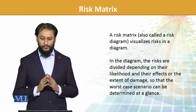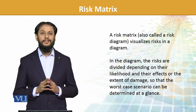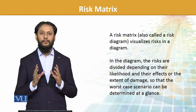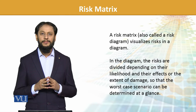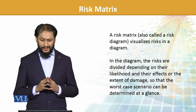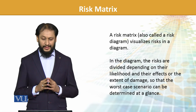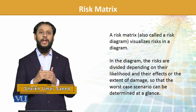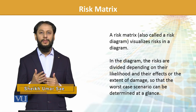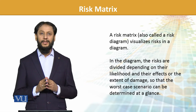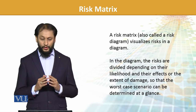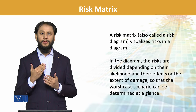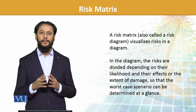Risk matrix, also called risk diagram, visualizes risks in a diagram. Basically, risks are plotted in a graphical image — that is referred to as a risk matrix. In this diagram, risks are divided depending on their likelihood and the effect, and the expected damages they could have on us. The chances of occurrence and how it can impact us — that is being gauged in this. Different scenarios are plotted and visualized for better understanding and better application.